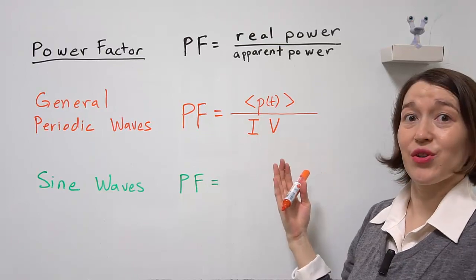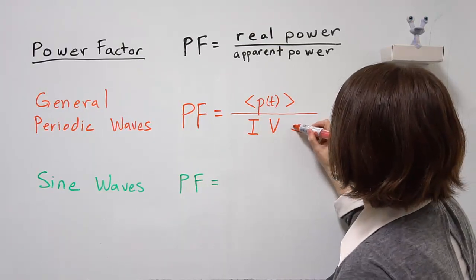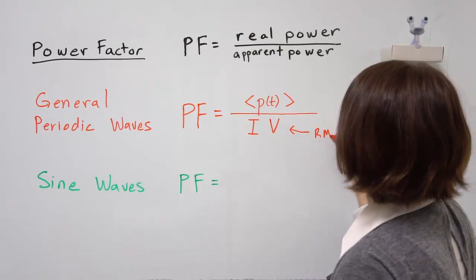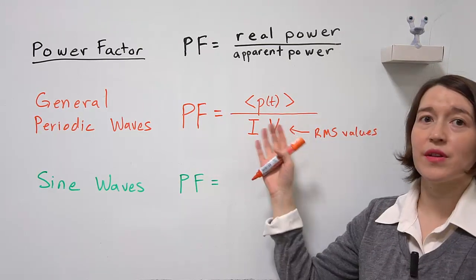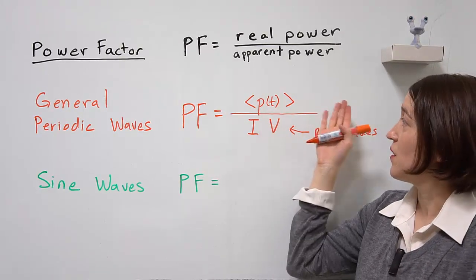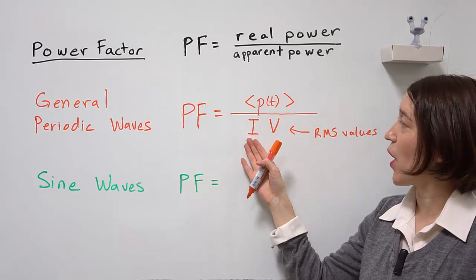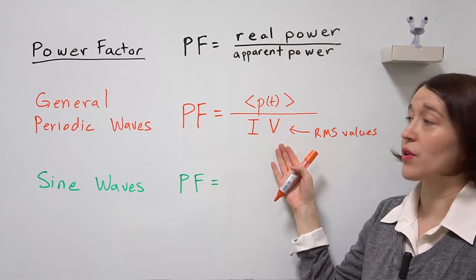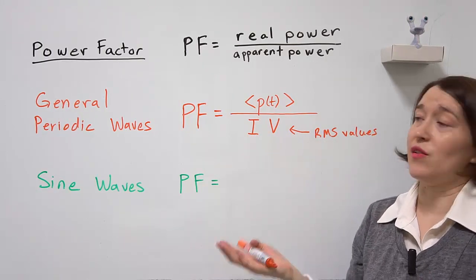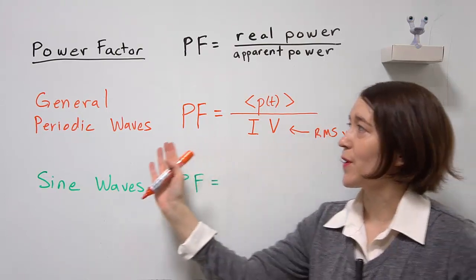And that's your apparent power. So this is the full definition - once you find your average value and you know the RMS values of your current and your voltage, that is your definition for general periodic waveforms.